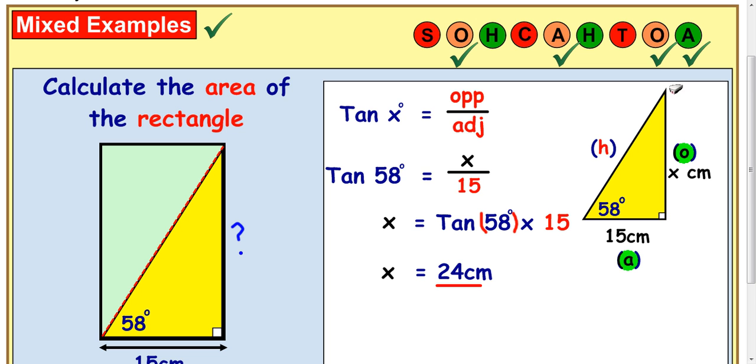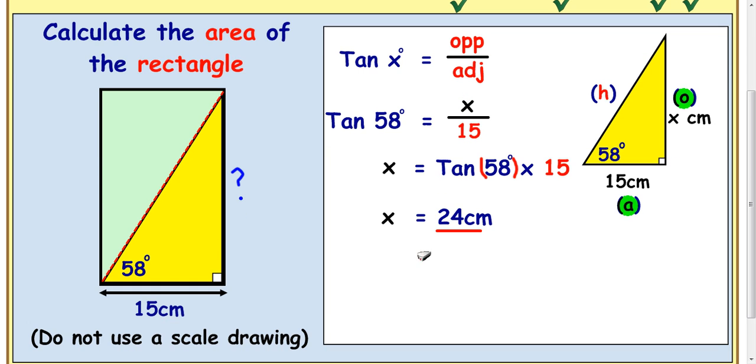So we know now that the height or the length here is 24 centimeters. We can go back to the first step to calculate the area. Area is equal to length times breadth. And we know that we've got 15 now and 24. So 15 times 24 is 360 centimeters squared.